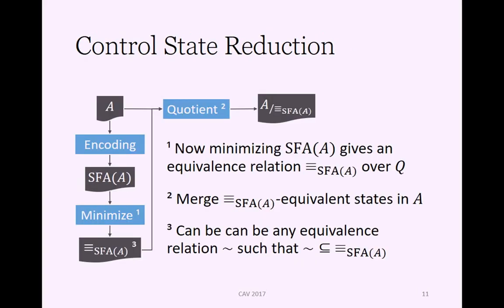Now when we have this encoding at hand, then we minimize it, which gives us an equivalence relation over the set of states Q. What we do with this equivalence relation is that we merge equivalent states in the original transducer. One thing we could do if we wanted to was that we could do something less than minimizing the encoding. If we can reduce it somehow otherwise without paying the full cost of minimization, then that would give an equivalence relation that is a subset of the full equivalence relation over the states, and it would be safe to use that.